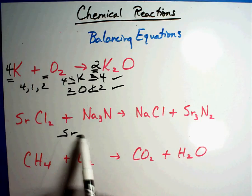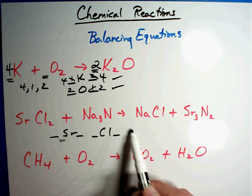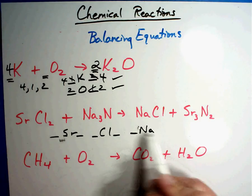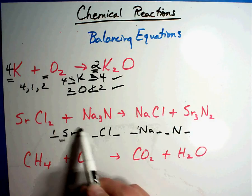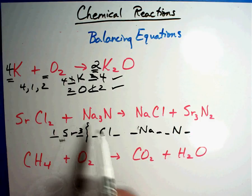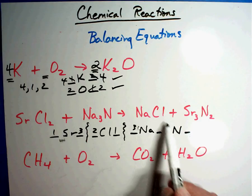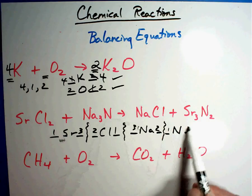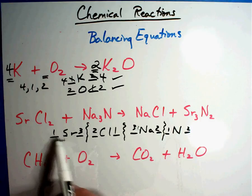I'm going to count Sr's and Cl's and Na's and N's. Sr is one, Sr is three, we're going to have to fix that. Cl's two and one, we're going to have to fix that one. Na's three and two, that's messed up. N's one and two. Oh wow, we're going to have to fix them all. Let's see what we want to start with. Let's start with Sr's. One and three. To fix that, I need a three there.